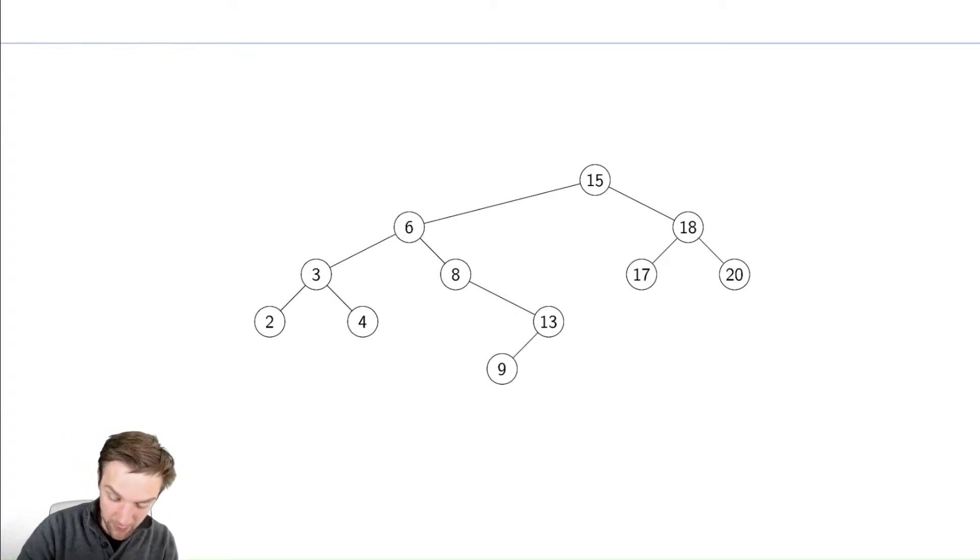Suppose we wanted to perform the operation insert 14. Where would 14 have to go in this tree? Let's figure that out. Well it's less than 15 so it had better be over here, and it's greater than 6 so it had better be over here, and it's greater than 8 so it had better be over here, and it is greater than 13 so it had better be over here. Hey look I found a place to put it.